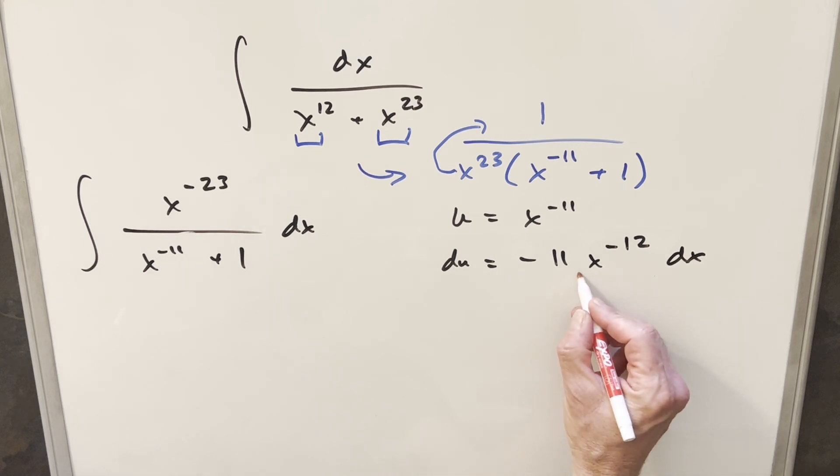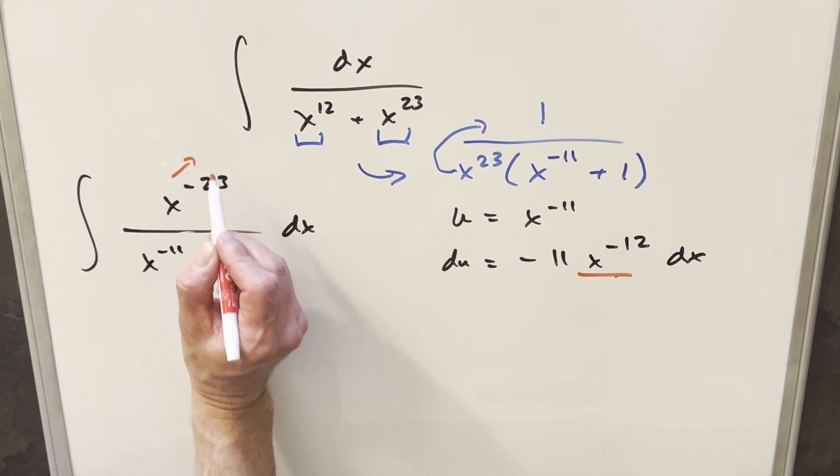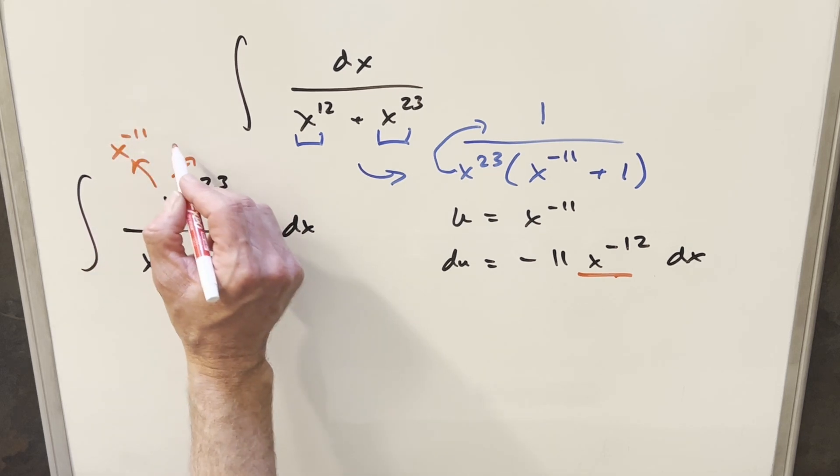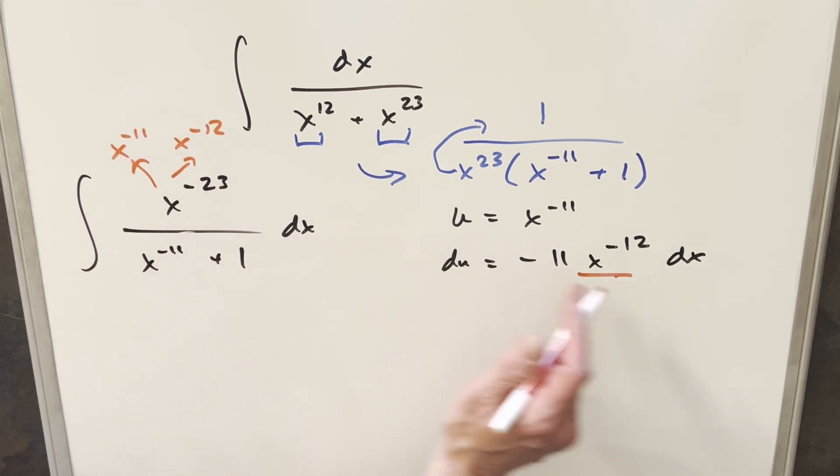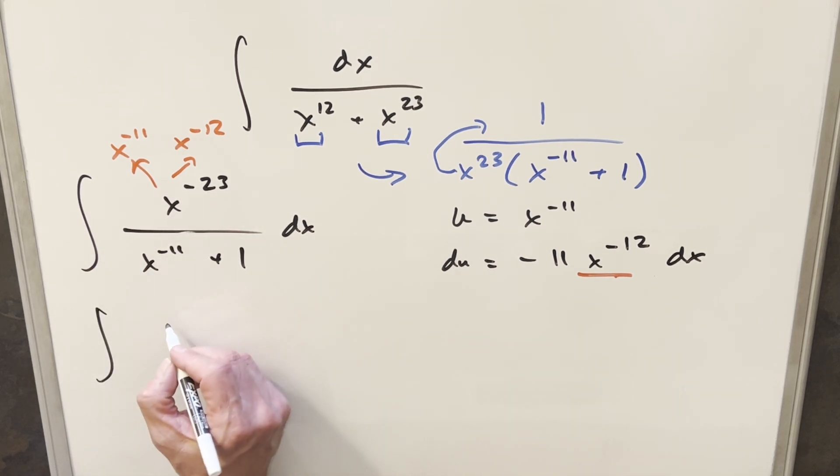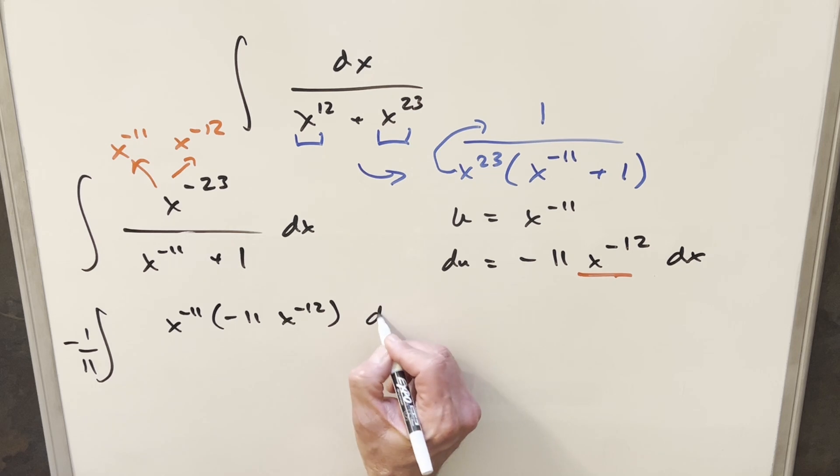But then what I can do is create this x to the minus 12 by splitting up x to the minus 23. I can split it like x to the minus 11 times x to the minus 12. So we get that term. But when I split this out, I also want to get this minus 11 in here. So I'm going to write it as x to the minus 11 times minus 11 x to the minus 12. I don't want to change it, so let's multiply by minus 1 over 11 in front.